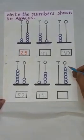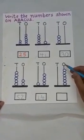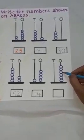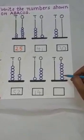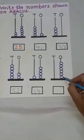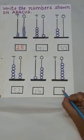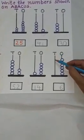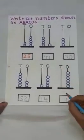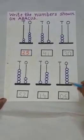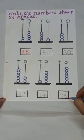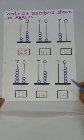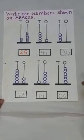Now, come to the next abacus. Count the number of beads at the ones place: 1, 2, 3, 4, 5, 6. How many beads are there? 6. And there is no bead at the tens place. So, we are going to write here 0. Children, 0, 6 is equal to 6 only. So, we can write 0, 6 or only 6. Thank you.